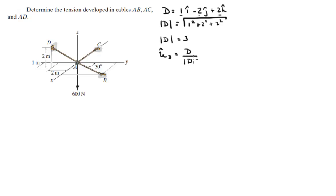So the unit vector D is given by the vector D divided by its own magnitude, and it comes out to be 0.333 in the i minus 0.667 in the j plus 0.667 in the k. The tension vector AD, the Cartesian vector form of this vector, will be given by the magnitude of AD multiplied by the unit vector in its direction.